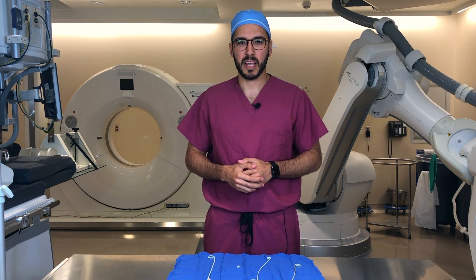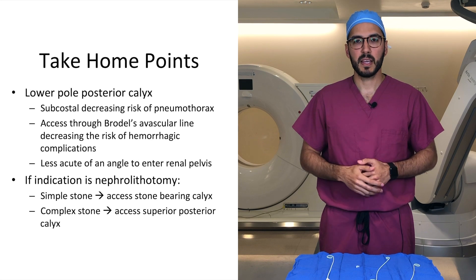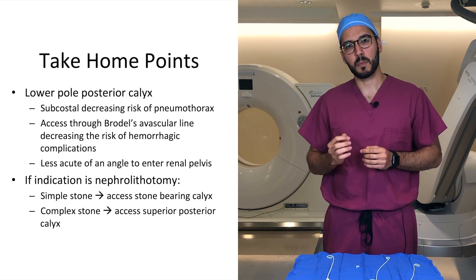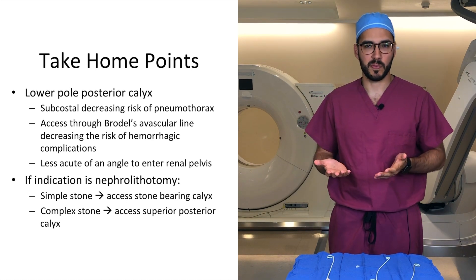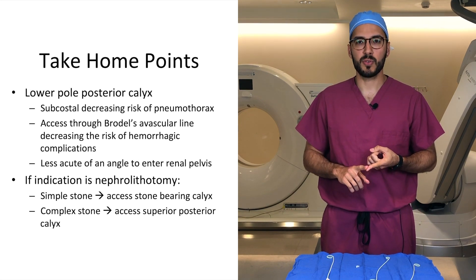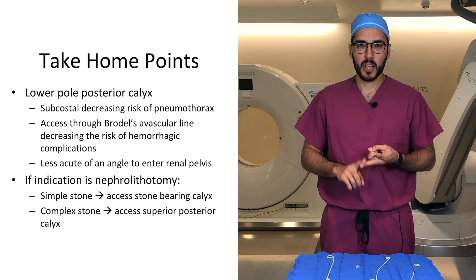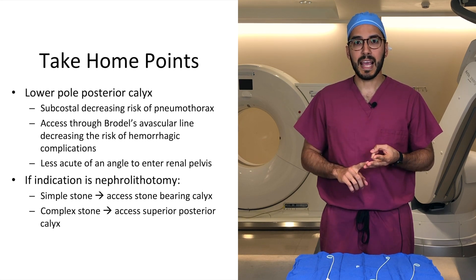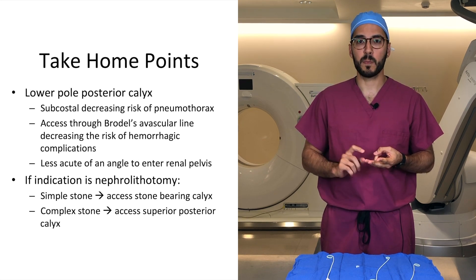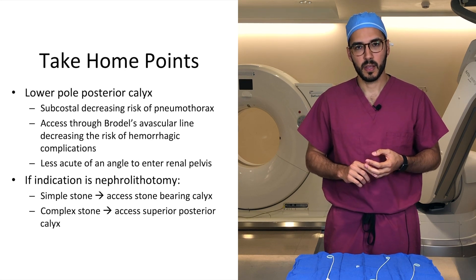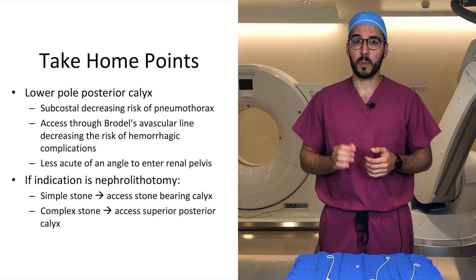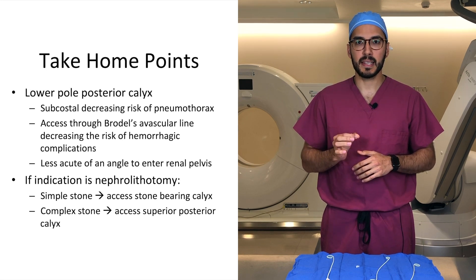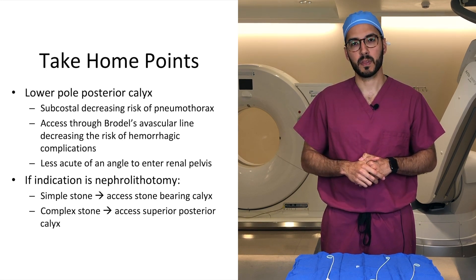To wrap this video up, here are the major take-home points. Understanding renal anatomy is important in order to perform these procedures safely. A posterolateral approach to a lower pole posterior calyx is ideal: it's subcostal, decreasing the risk of pneumothorax; you access along Brödel's avascular line, decreasing the risk of hemorrhagic complications; and the angle of entry into the renal pelvis from a lower pole posterior calyx is less acute. There are situations when a lower pole posterior calyx is not ideal — when the indication is nephrolithotomy, access site is dictated by stone location and complexity.